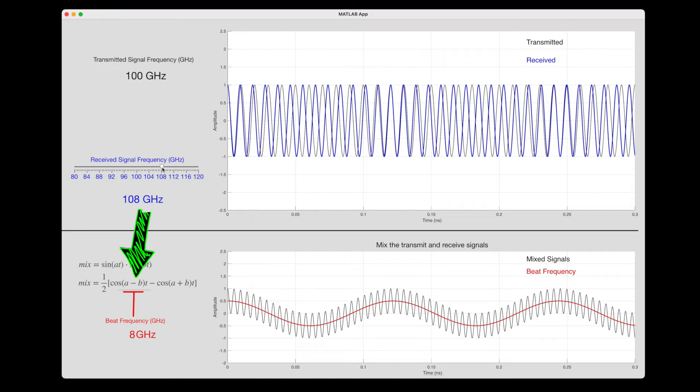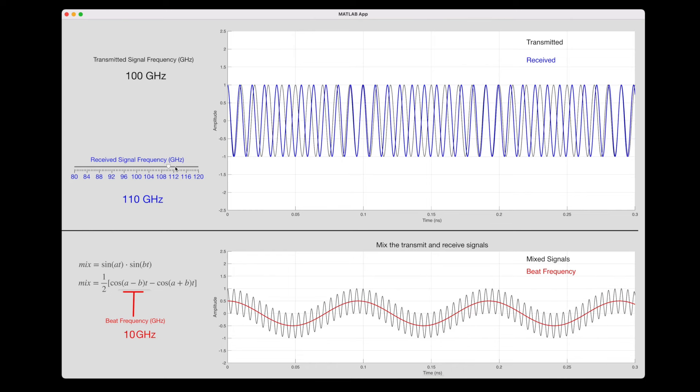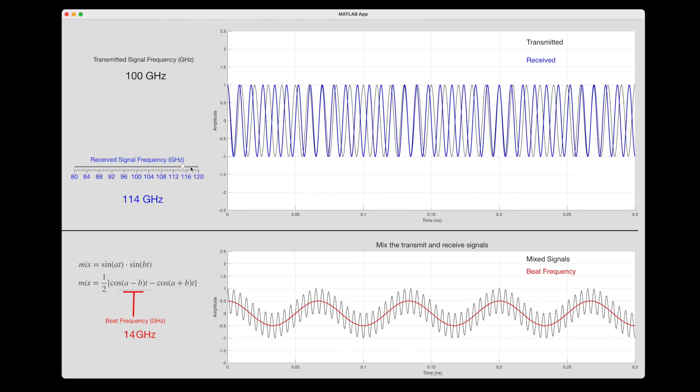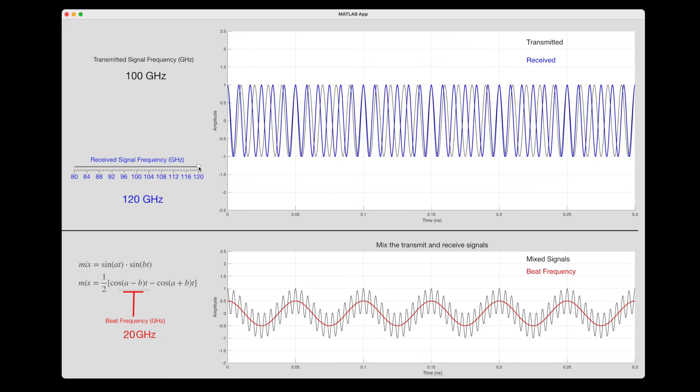When we're talking about two signals in the gigahertz, adding the transmit and receive frequencies together produces something that is extremely fast. However, subtracting the two produces just the shifted Doppler, which in this example is 8 gigahertz. But for practical applications, it would only be in the kilohertz range. So we have a gigahertz signal superimposed with a kilohertz signal, and we could easily separate out the beat frequency with a low-pass filter. As I increase the received signal frequency, the beat frequency increases as well. Therefore, by looking at the much slower beat frequency, we can determine the radial velocity of the object.